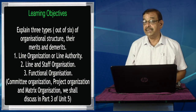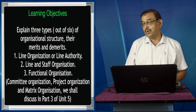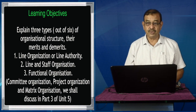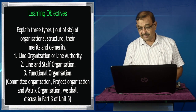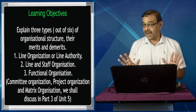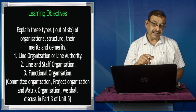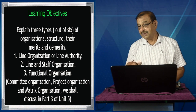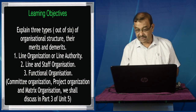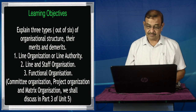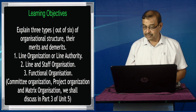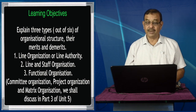We shall also discuss the merits and demerits of each particular structure. We have taken three structures in this part. Here we have taken line organization or line authority, line and staff organization, and functional organization. In the third part of this module, we shall take the remaining three: committee, project, and matrix organization.